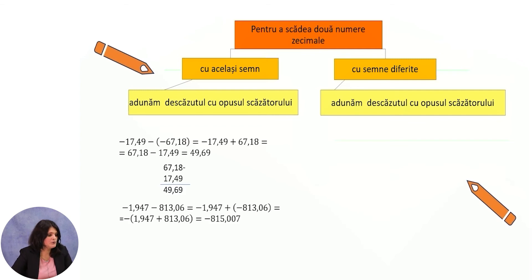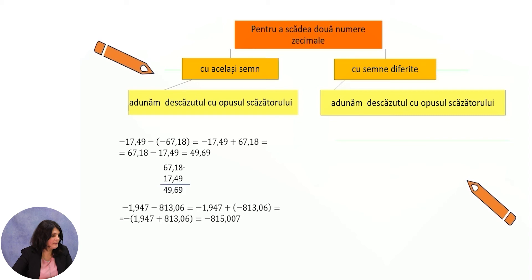Minus 1.947 minus 813.6: we add the minuend minus 1.947 with the opposite of the subtrahend, giving minus 813.6. We now add two numbers with the same sign — they are added and the result gets the minus sign. The result is minus 815.547.